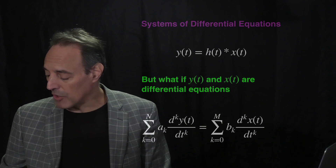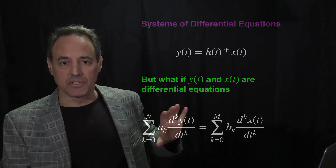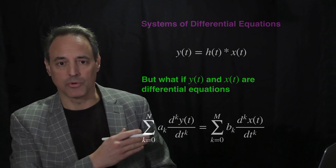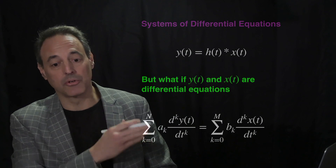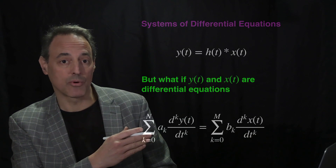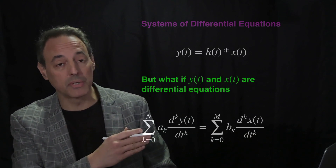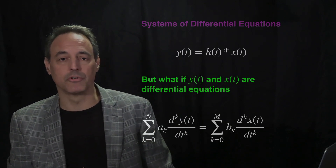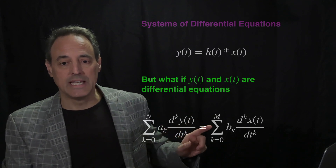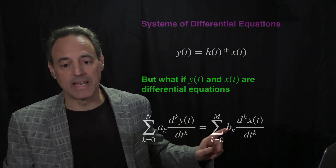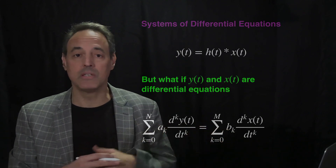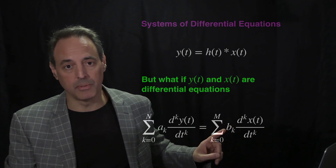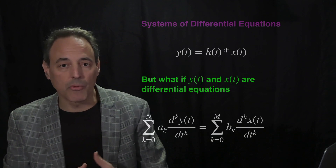This is our generic representation. The output is described by an nth order differential equation — we sum from k equals 0 to n, where k is the derivative order, up to the nth order derivative. The coefficients a_k weight each of the linear differential terms. The second term is the input, also described by a differential equation, now of order m, where n and m can be different. The coefficients here are b_k.